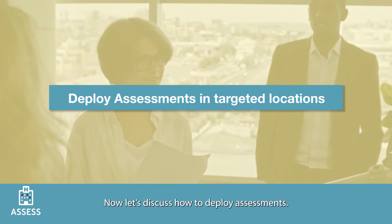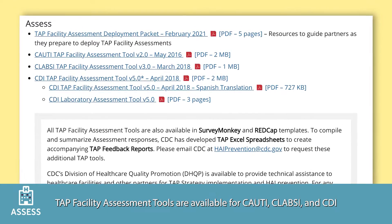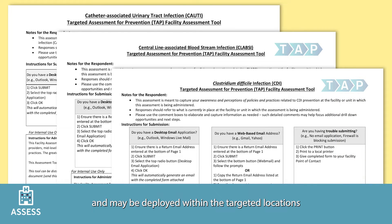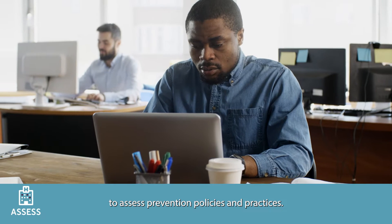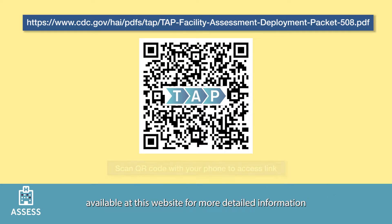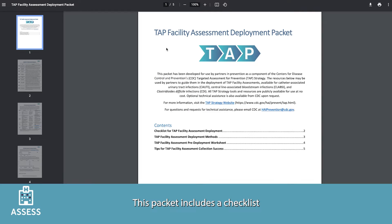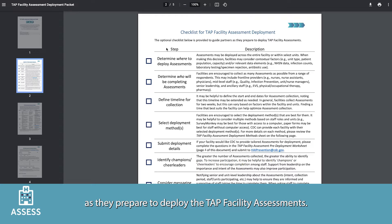Now let's discuss how to deploy assessments. TAP facility assessment tools are available for CAUTI, CLABSI, and CDI, and may be deployed within the targeted locations to assess prevention policies and practices. Partners can access the TAP facility assessment deployment packet available at this website for more detailed information. This packet includes a checklist providing step-by-step instructions to guide partners as they prepare to deploy the TAP facility assessments.